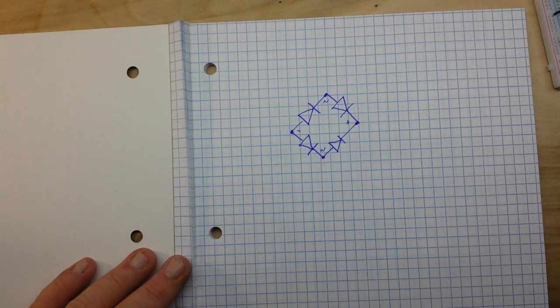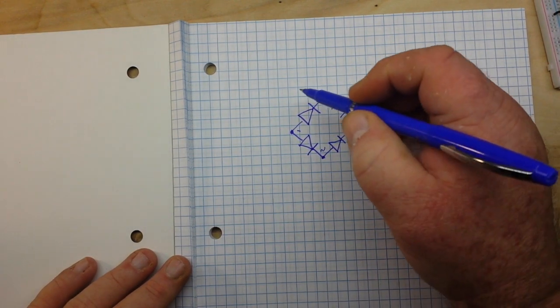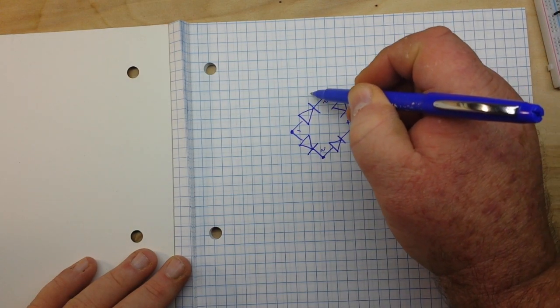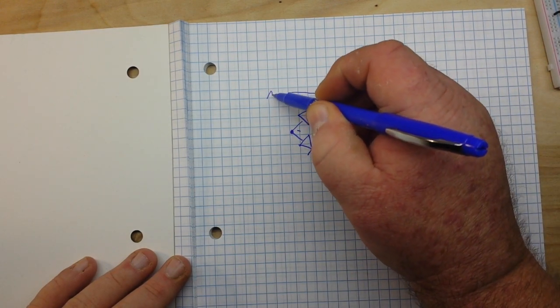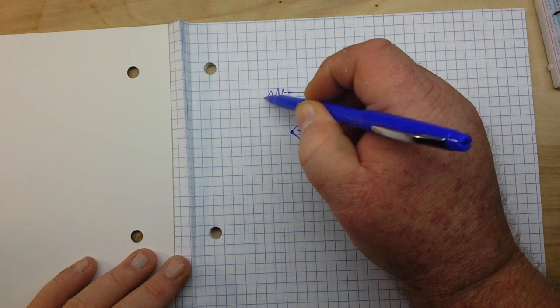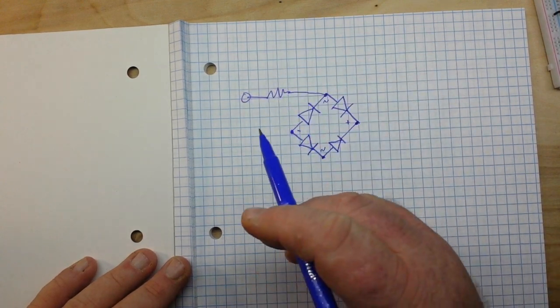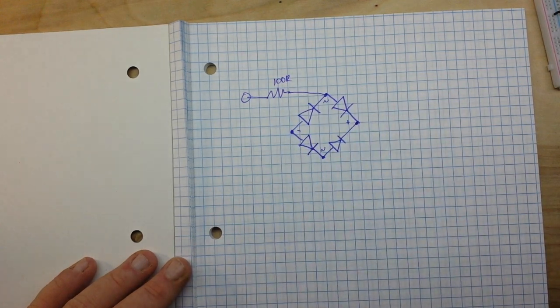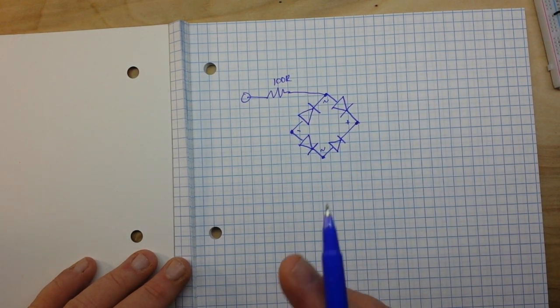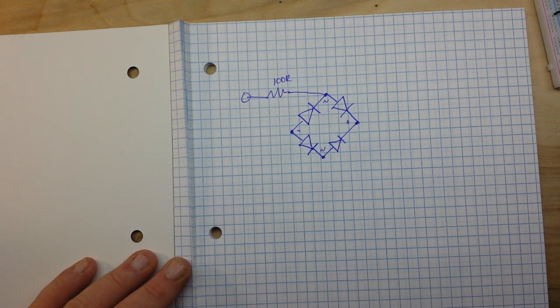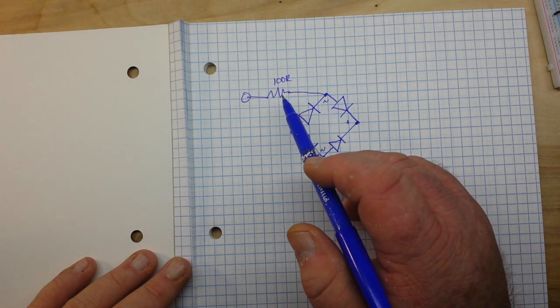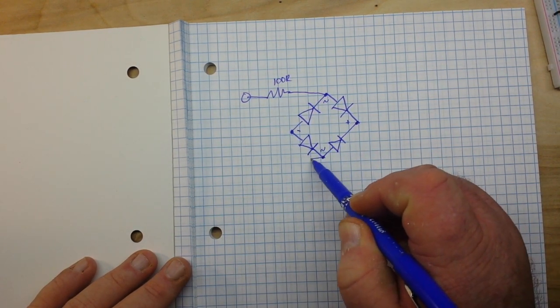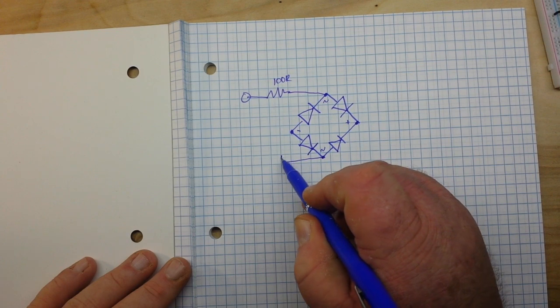Okay, so here is our bridge rectifier, and now we need to bring in our AC inputs. So we're going to bring in one here with the resistor. We're going to use 100 ohms. This is for the American market - you're going to need different values for the European - and that is to protect us against voltage spikes. Now our other input...